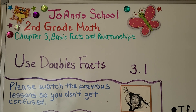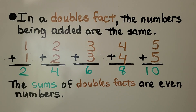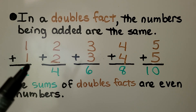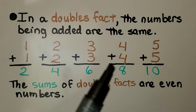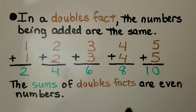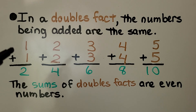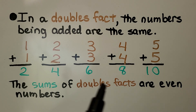Lesson 3.1: Use Doubles Facts. In a doubles fact, the numbers being added are the same. Doubles facts are like 1 plus 1, 2 plus 2, 3 plus 3, 4 plus 4, and so on. The addends are the same — we have a double set of numbers. The sums of doubles facts are even numbers: 2, 4, 6, 8, 10.